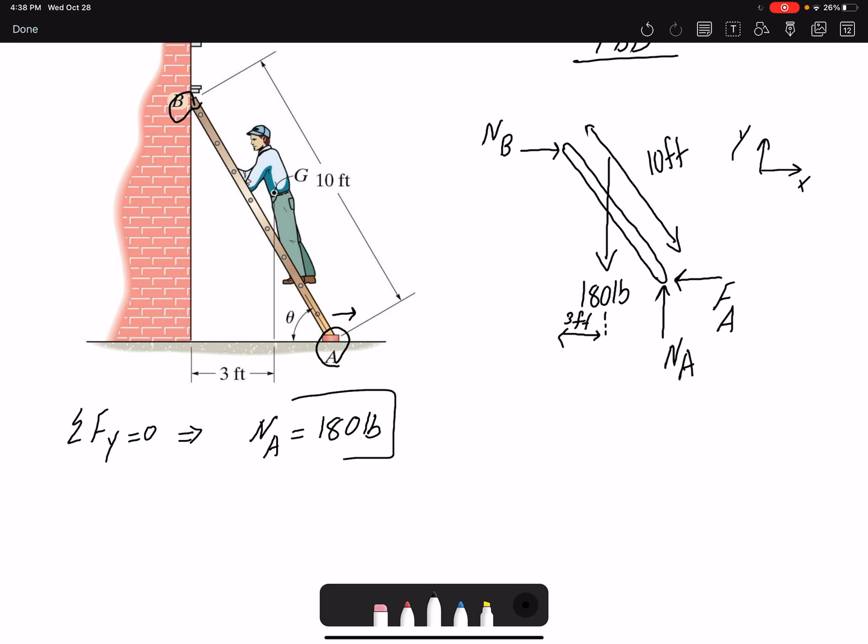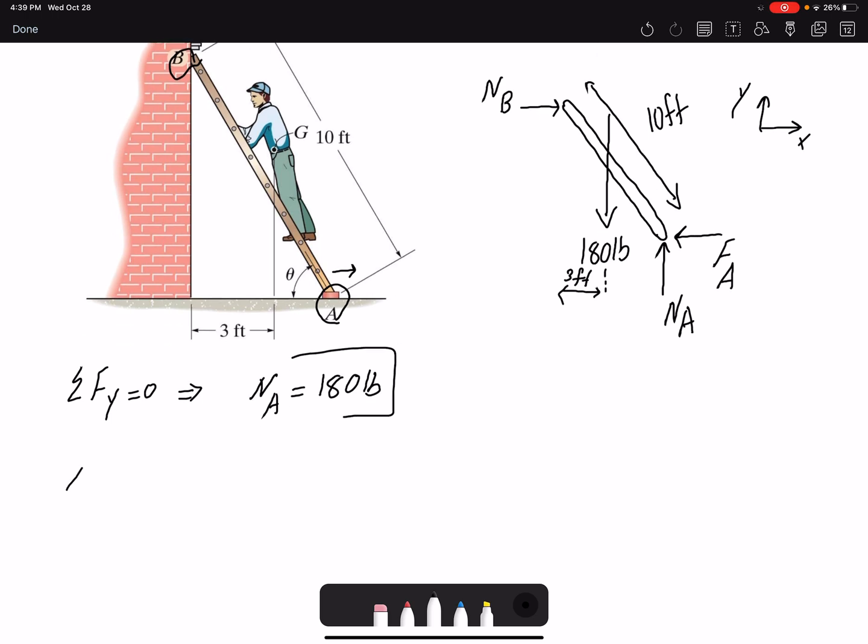This is the coordinate system I'm using, X and Y. I'm going to write a moment equation because I have the distance of 180 pounds to point B. So I'm going to write a moment equation about point B. I'm going to assume counterclockwise to be positive.